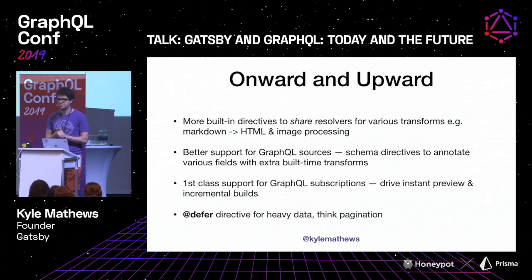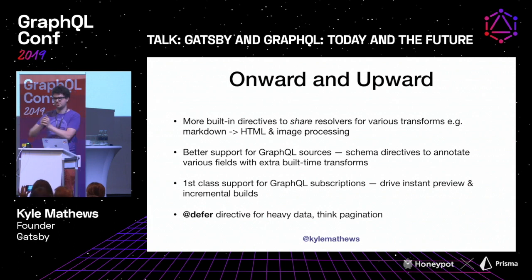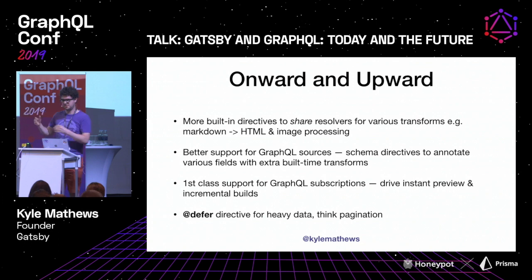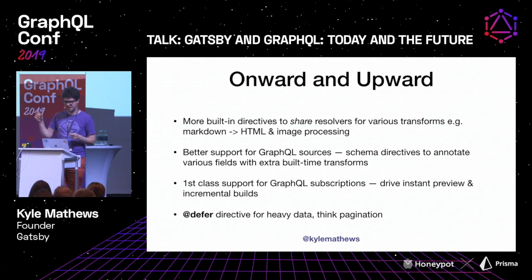We have a lot of other ideas for improving how Gatsby uses GraphQL. One is adding built-in directives to attach transformers to different parts of your schema. Gatsby is nice because you get build-time markdown and image transformation from local sources, but if you're pulling from an existing GraphQL API, you don't get those transforms. We want to add directives so you can annotate your GraphQL API and those transformations happen for you.